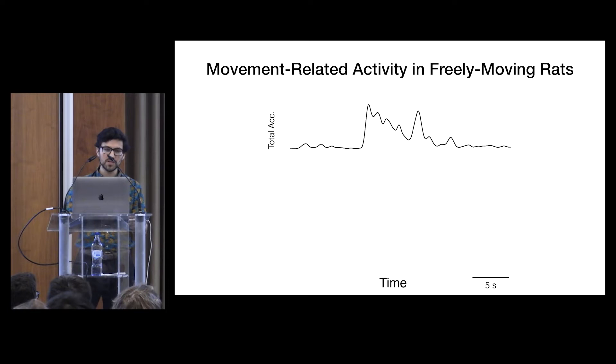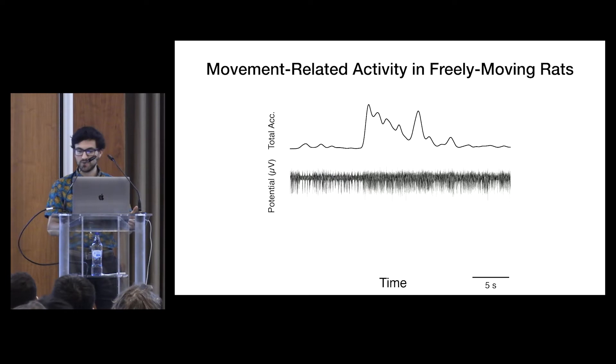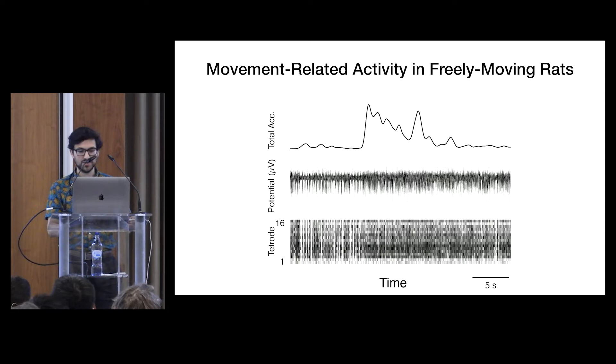So at first glance at the data, we confirmed in freely moving rats what people have been seeing in head-fixed mice, that there's a modulation of activity in V1 in response to movements. So this is one example bout of a movement aligned to spikes extracted in this raw trace and also extracted spikes in this raster from our 16 tetrodes. So this is good.